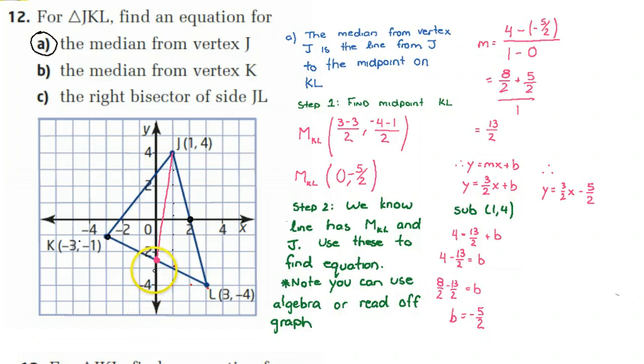So now the next step is if we know that line has MKL, which is the midpoint of KL, and J on it, we're going to use these to find the equation. Now this is a little trickier to do by reading off the graph, but with a little ingenuity you can actually read this equation right off the graph. But let's do this the algebraic way.